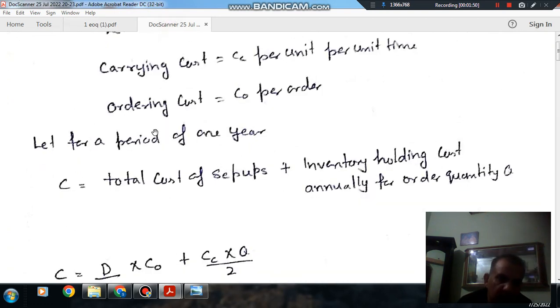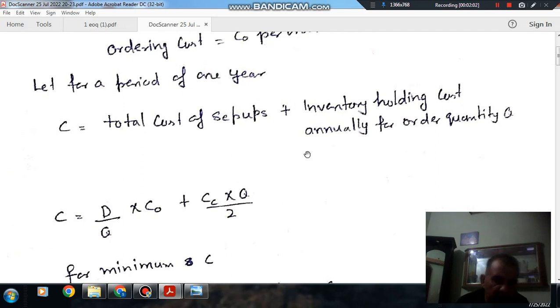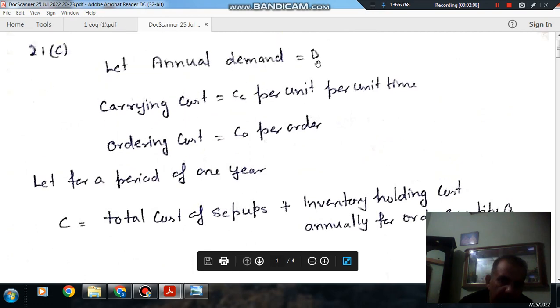So C is your variable cost, which is the sum of ordering cost or setup cost and total inventory cost annually. We are taking time as one unit, and the demand is D.